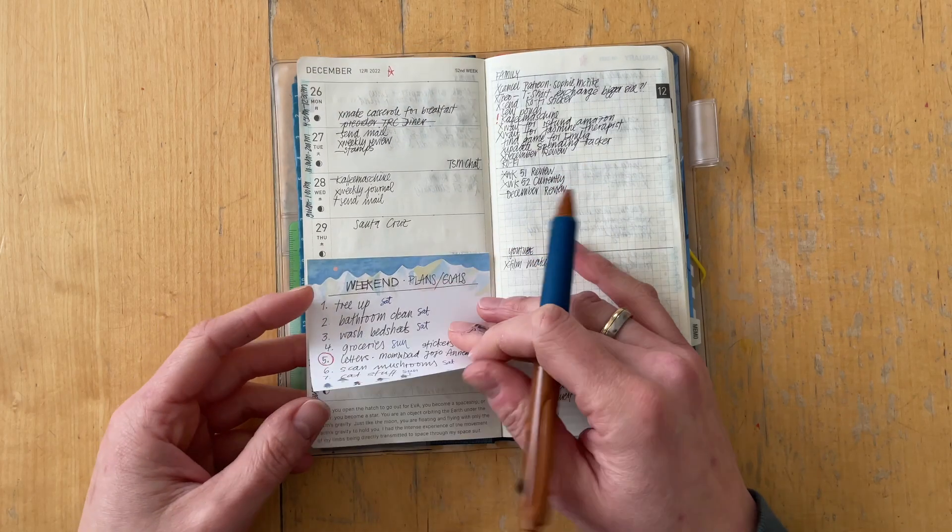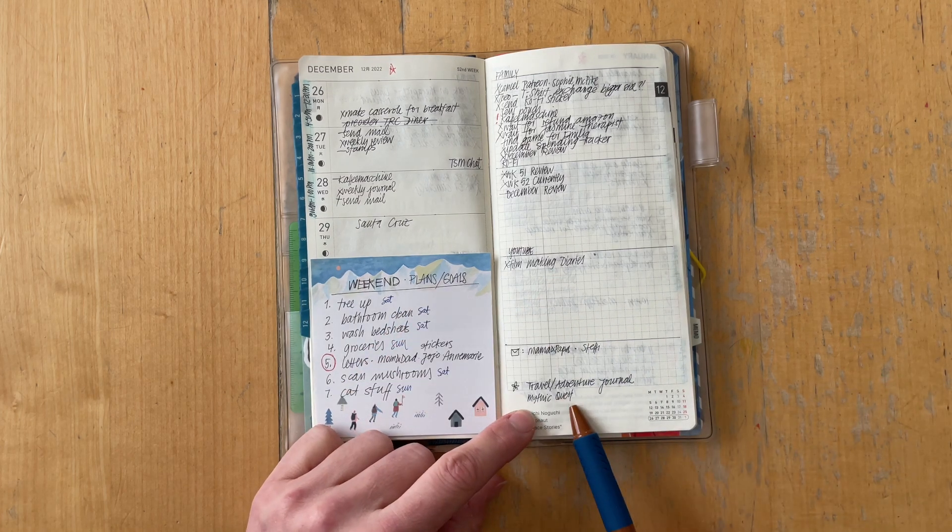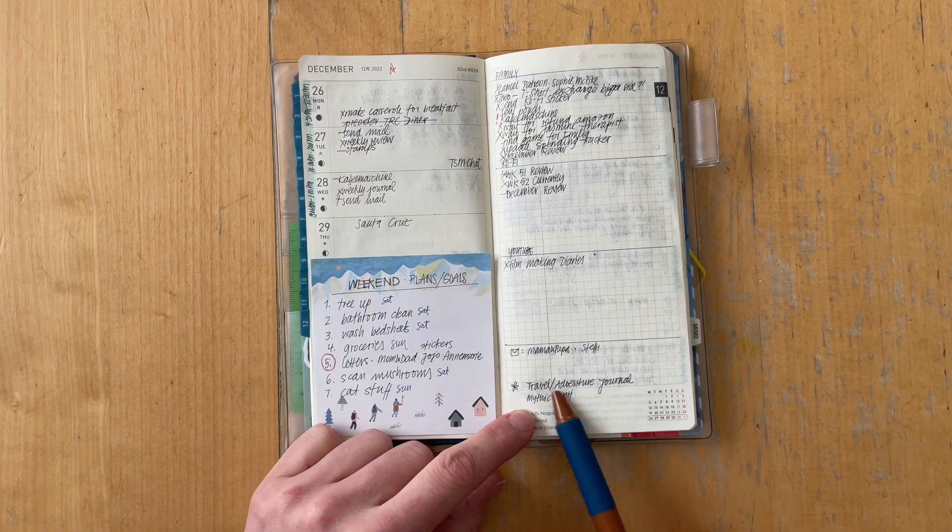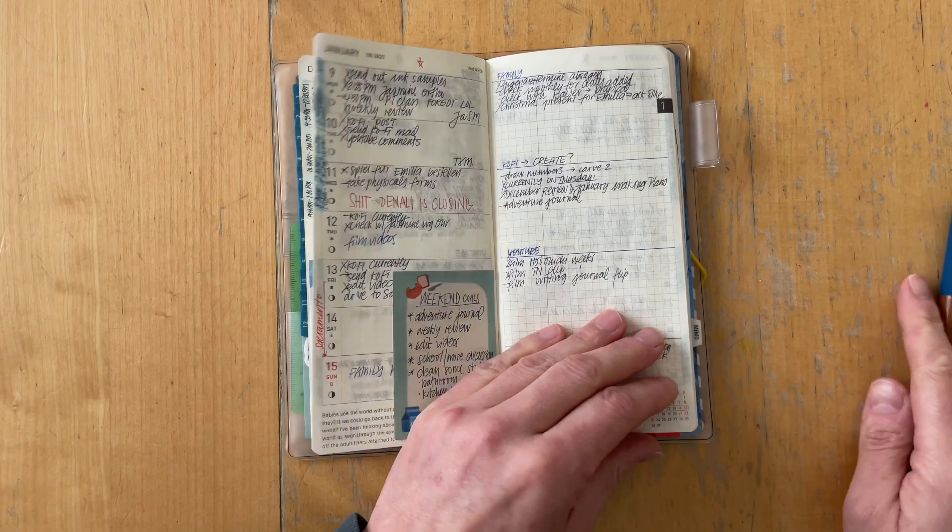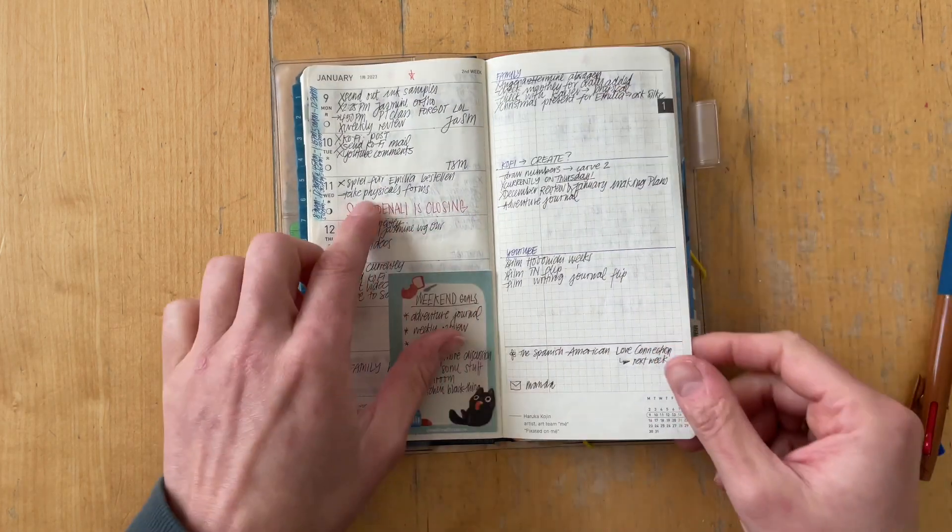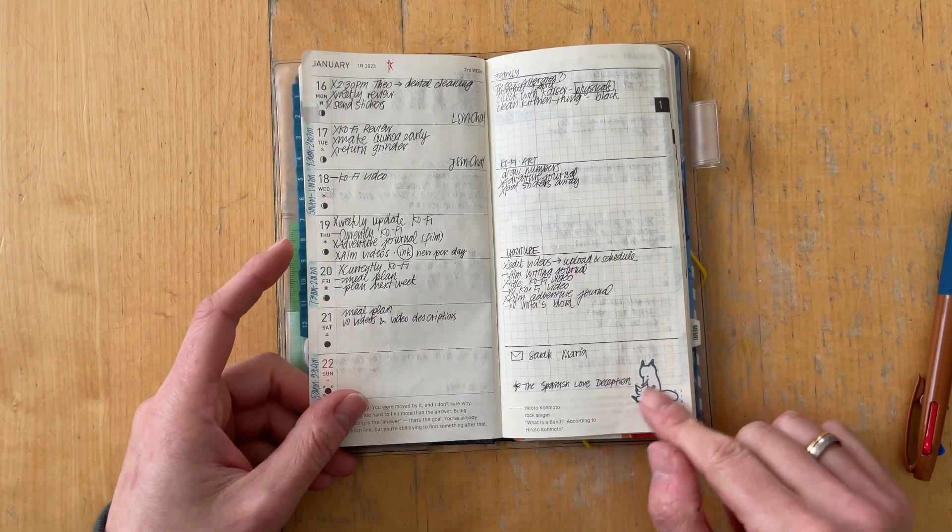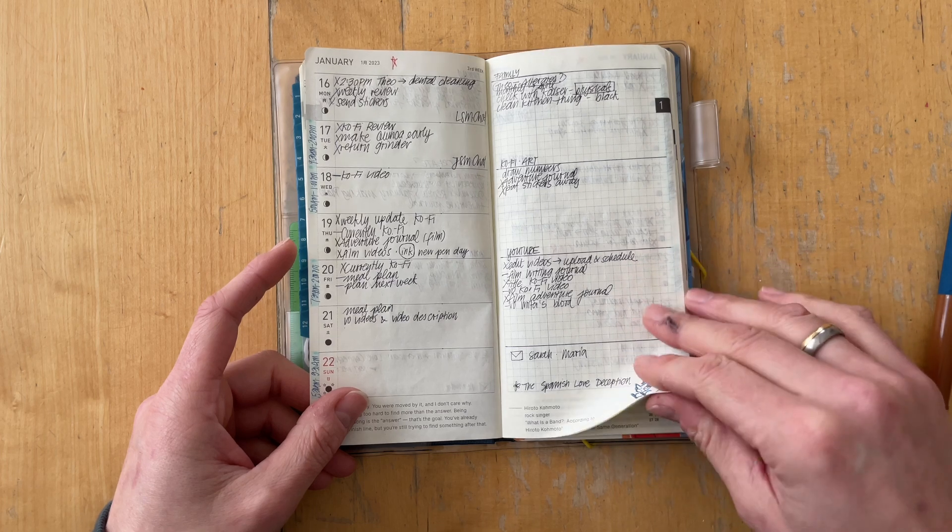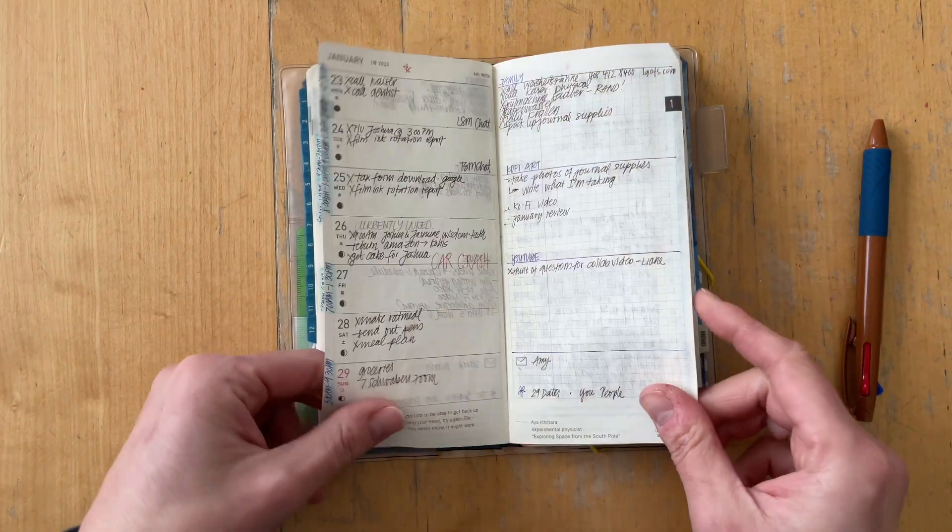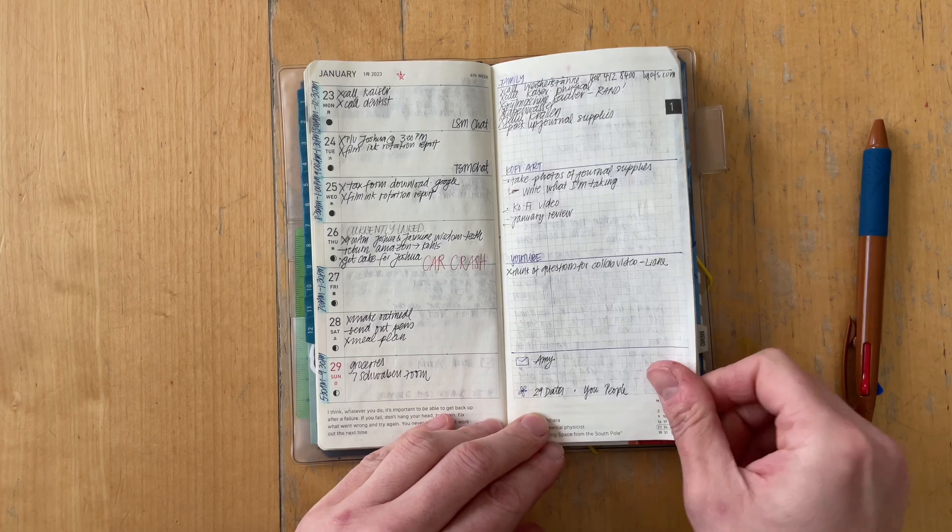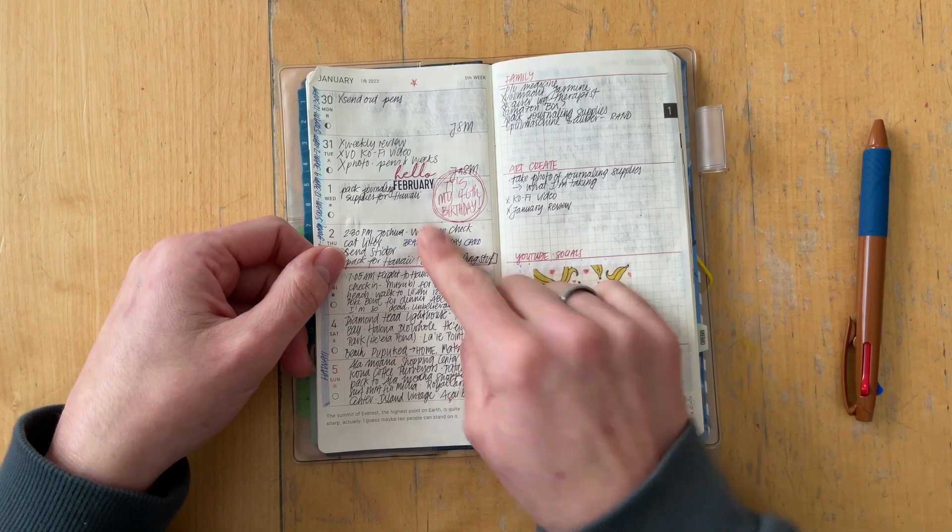I sometimes put in sticky notes. This was for weekend plans. Here, it was when I watched Mythic Quest. That's how this turned out to be. I wrote down things that we were dealing with. I put a little teeny tiny sticker here. But I really, I don't decorate this planner at all. It is just pen and paper.